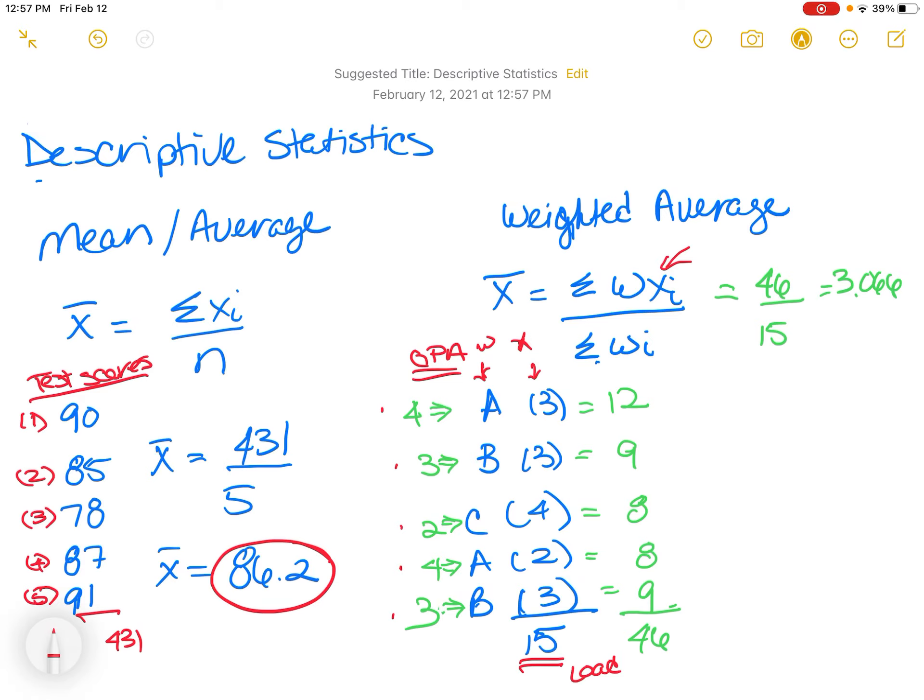So if I multiply all of these, all of your weights, and then add them up, they sum to be 46. So the four times the three is 12, the three times the three is nine, the two times the four is eight, the four times the two is eight, and the three times the three for your B in the three-hour class is nine. I sum these, and this is what I get for your W times your XI. And that is the sum.